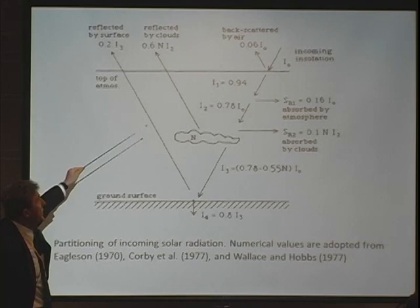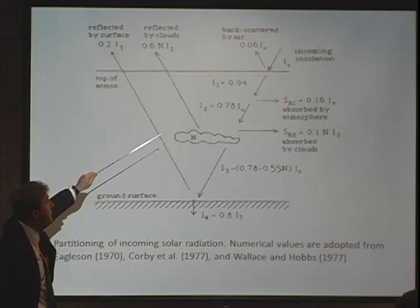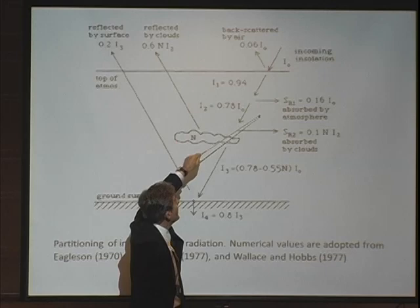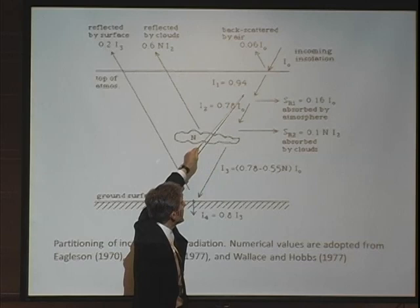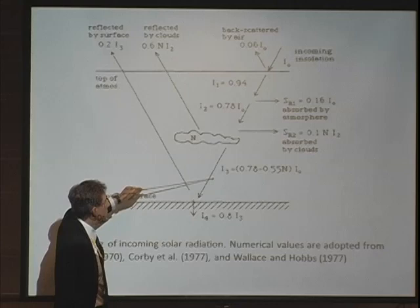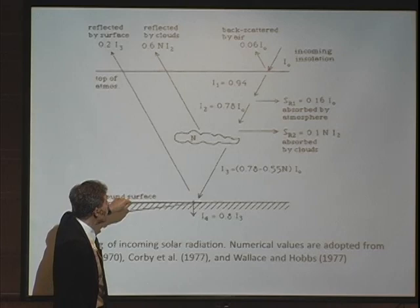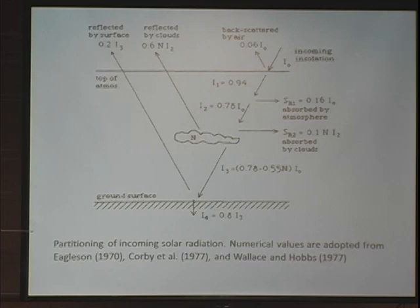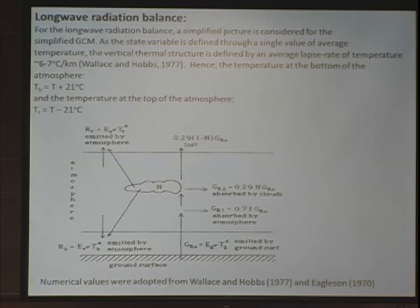To show how incoming solar radiation is partitioned in the atmosphere: part is immediately scattered back to space; the remaining portion is first absorbed by the atmosphere, part is absorbed by the clouds and part reflected back to space, and the remaining component reaches the surface where it is reflected by albedo back to space. These are modeled using numerical values adopted from Wallace and Hobbs, Carby et al., and Eagleson.